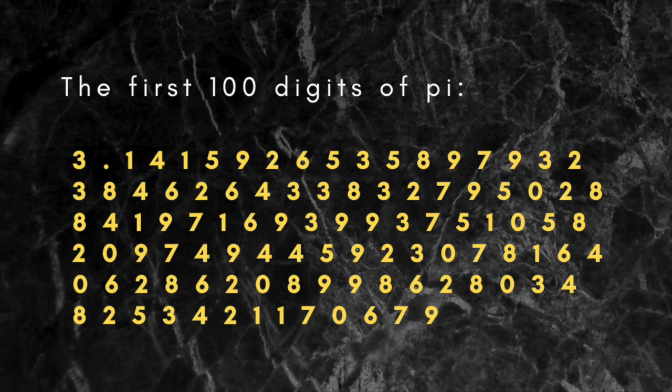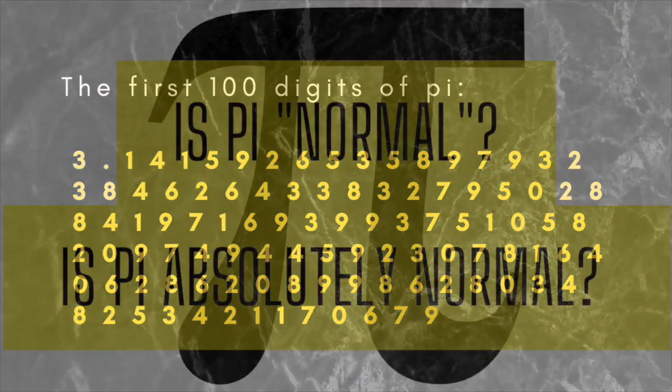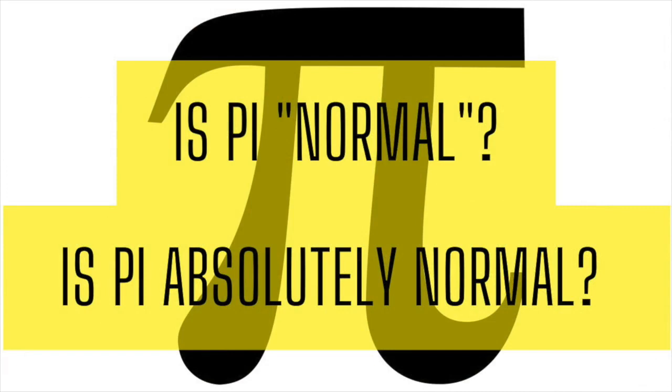If they do, then pi is said to be normal in base 10, which is what the vast majority of mathematicians believe.